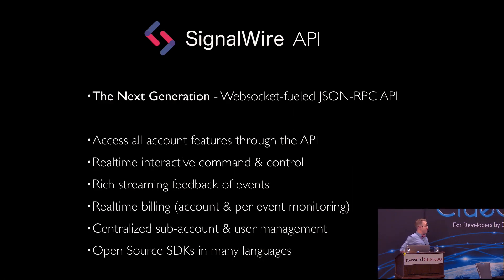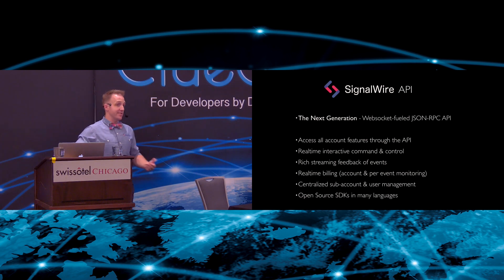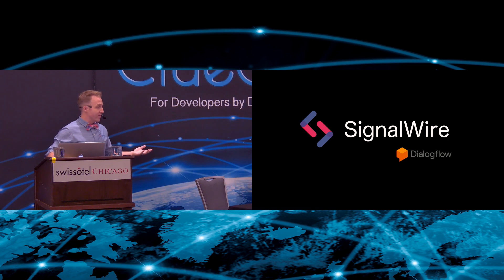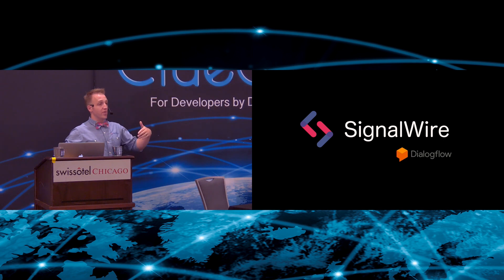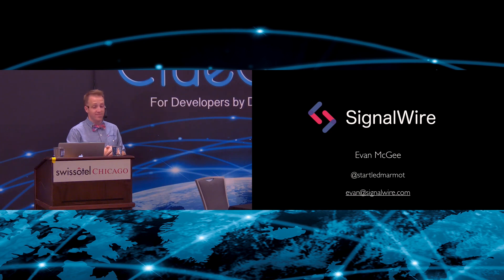We're going to be releasing APIs extremely quickly — you're going to see new ones every week, every day, more variables. We're exposing as much of FreeSwitch as we can get out to people as fast as we can. We're also going to have open source SDKs in as many languages as we can — C, C++, Go, Ruby, Python. We have many of them under development and several will be released while we're here. We also partner with Google's Dialogflow to allow access to that — you can hook up a phone number to Dialogflow and use their NLU programs. I'm Evan McGee — you can find me on Twitter at StartledMarmot, or send an email to evan@signalwire.com. Get out there and build some cool stuff!